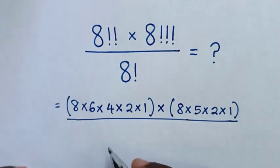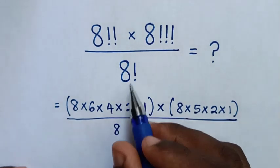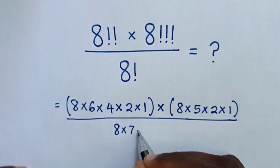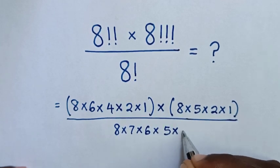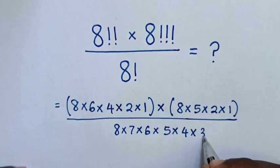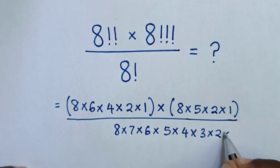8 factorial is same as 8 minus 1 it will be times 7, then times 6, then times 5, then times 4, times 3, times 2, times 1.